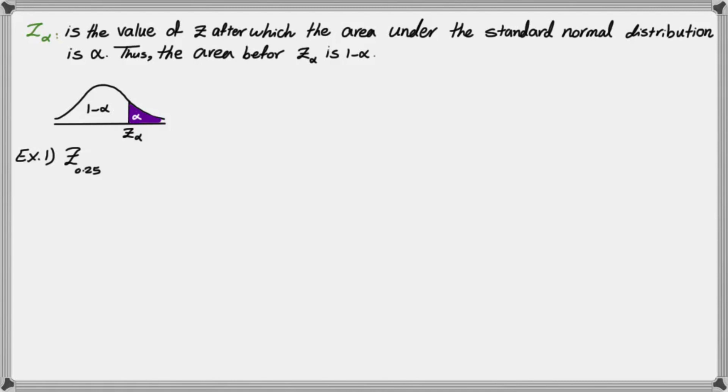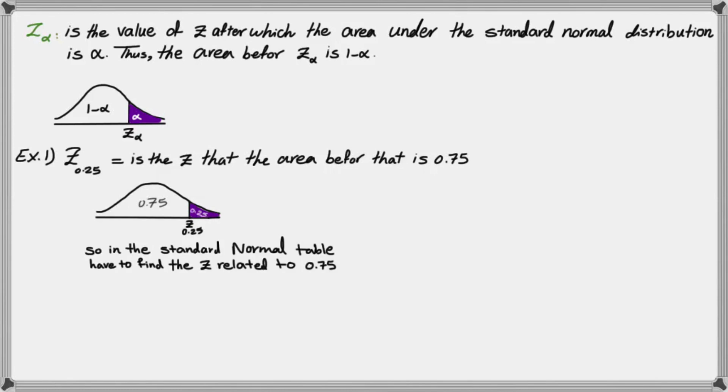So for example, suppose that we want to find Z of 0.25. That means the area before Z of 0.25 is 0.75. And I have to find that area in the table. So this is the figure that can help us to understand this better. So if this is Z of 0.25, the area before that is 0.75.